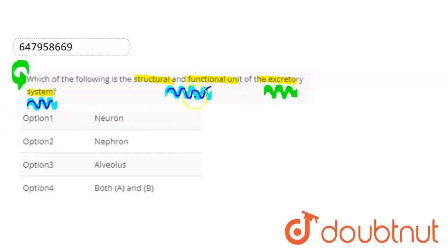The first option we have given here is the neuron. So this option is the wrong one. Because if we talk about neuron, this is the nerve cell, which is the basic building block of our nervous system.